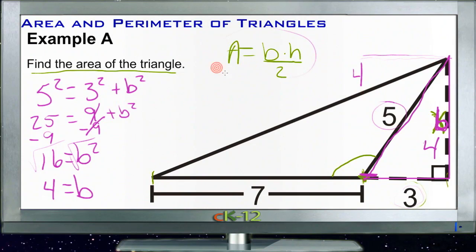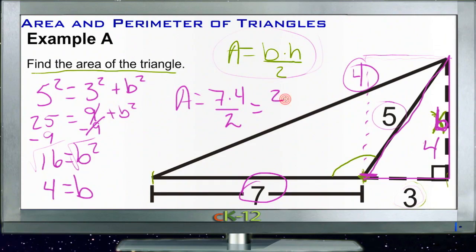Well now we can use our formula. Now we can take our base of 7 units and multiply it by our height of 4 units and then divide by 2. So we get area equals 7 times 4 divided by 2. Well 7 times 4 is 28, and 28 divided by 2 is 14. So our area is 14 units squared.